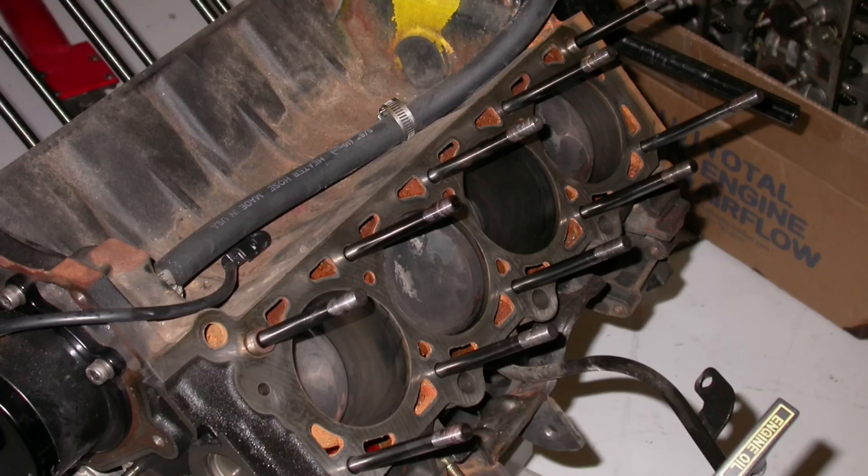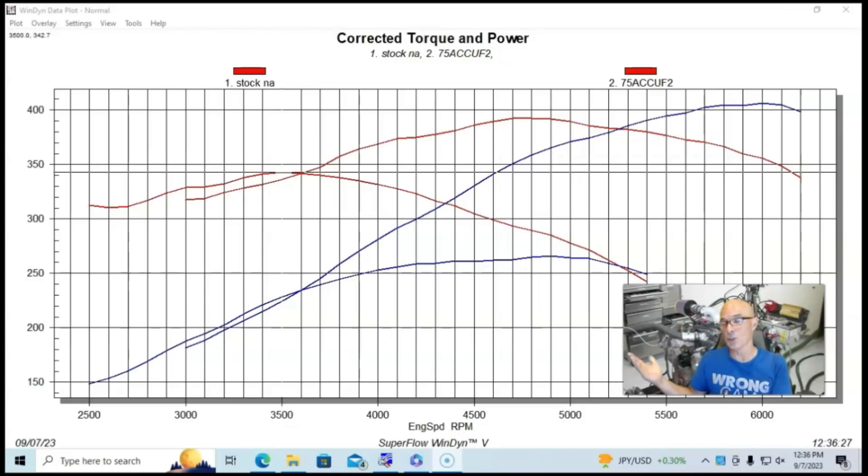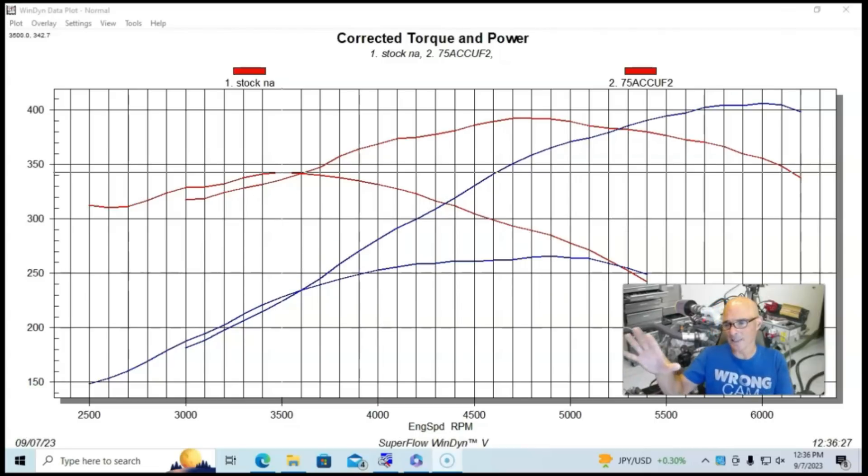So we took the non-PI short block, added PI heads to it, which increased the static compression higher than it would be if we would have just used a PI because they adjusted the chamber size and the piston design when they went from PI to non-PI to get a similar kind of compression ratio. But when you do the hybrid here, we're looking at somewhere near 10 to one or something.